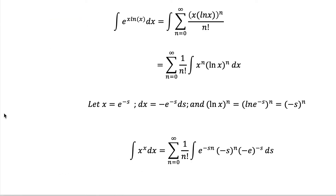Now going to the next slide, instead of the integral of e^(x ln x) dx, we write the integral of the sum from n equals 0 to infinity of (x ln x)^n over n factorial. Since 1 over n factorial is a numerical value, we can factor it out as sigma from n equals 0 to infinity of 1 over n factorial. What remains inside the integral is just the variable terms: x^n times (ln x)^n dx. We want to search for a more familiar integral because this one we cannot solve directly, so let's make a substitution.